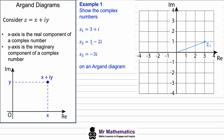For z2 we have 1 minus 2i, so we have a real part of one and an imaginary part of negative two. Coming from the origin we go one along the real axis and then two down for the imaginary axis. We plot this point and label it z2.